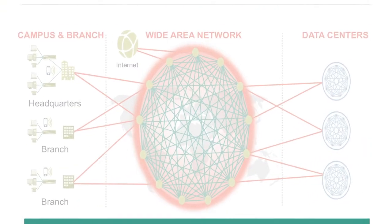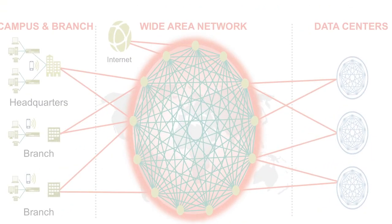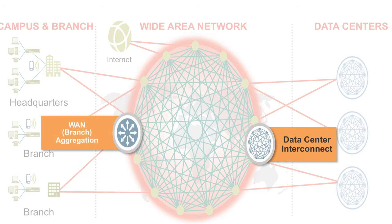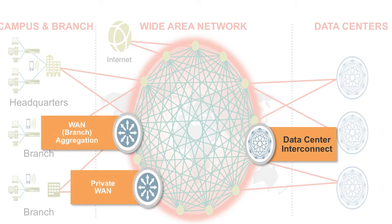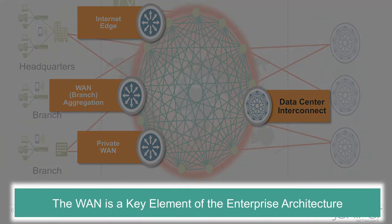The key WAN touch points of your enterprise network are data centers, branches, campuses, dispersed geographical locations, access to public internet, remote employees and partners. The WAN is the critical network glue that holds and connects your enterprise.